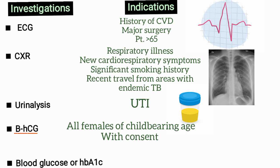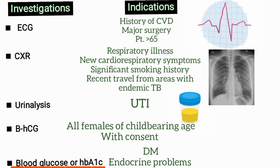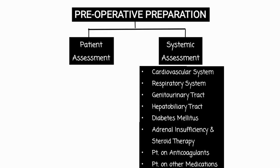Urine analysis is also not done routinely — only when a urinary tract infection is suspected. A pregnancy test or beta-hCG is advised for all females of childbearing age, and always ensure to get the patient's consent. Blood glucose and HbA1c are advised for patients with diabetes mellitus or endocrine problems.